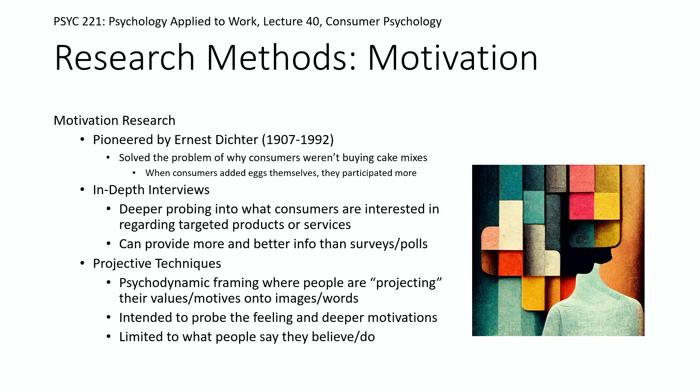The problem with the projective techniques approach is that you're still limited to what people can tell you, and then you have to infer your psychodynamic narrative to figure out their deeper motivations — and it's hard to know if you're right. Overall, this psychodynamic approach is criticized for lack of reliability, and the consensus in psychology right now is that the notion of an active unconscious — one that's able to think in the same cause-and-effect, story-driven way as consciousness — is not well-accepted.